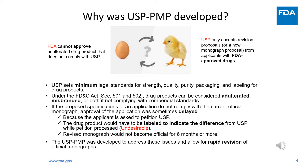The revised monograph would not become official for six months or more, since FDA cannot approve a drug product that does not comply with the USP. On the other hand, USP only accepts revision proposals or new monograph proposals with FDA-approved drugs. This becomes a chicken-and-egg issue. This USP PMP was developed to address these issues and allow for a rapid revision of official monographs.